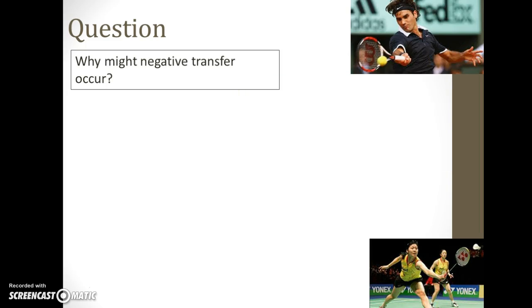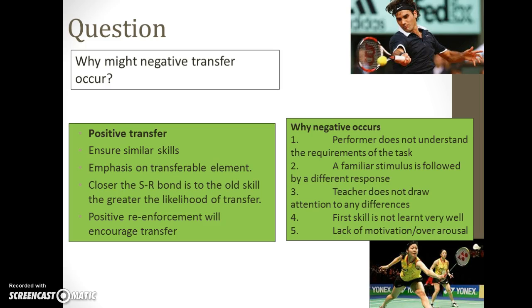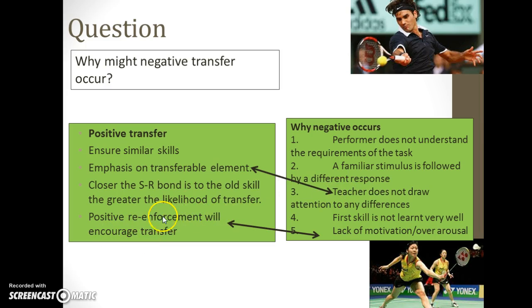Why might negative transfer occur? Think about what allows positive transfer to occur and link it across to negative. If a similar skill is used in a drill but the performer doesn't understand the requirements of the task, negative transfer can result. If the teacher doesn't draw attention to the differences between skills, that also contributes. A lack of positive reinforcement is another factor, as is a lack of motivation or arousal. The idea is that if you can identify the positive conditions for transfer, you can identify the negative occurrences by their absence.